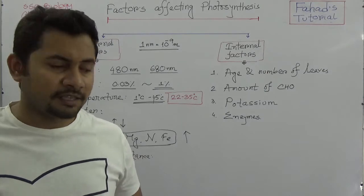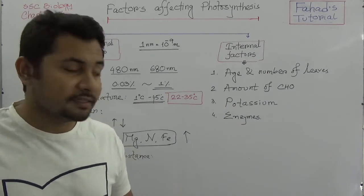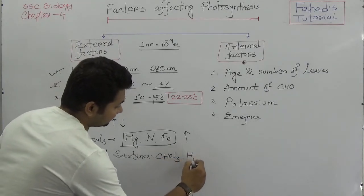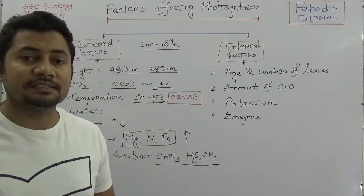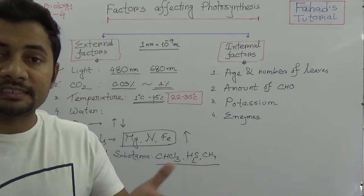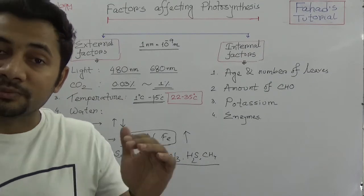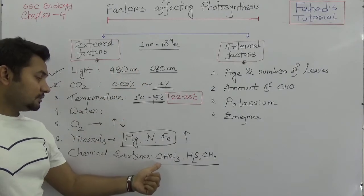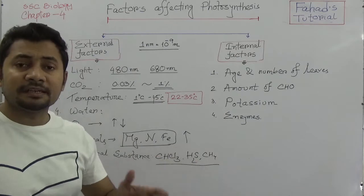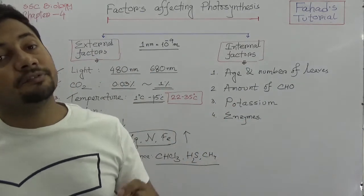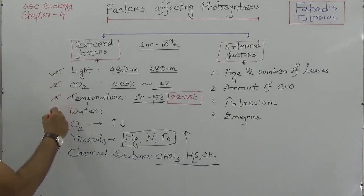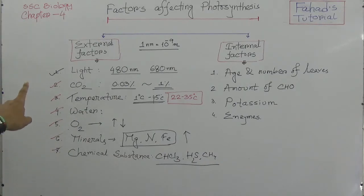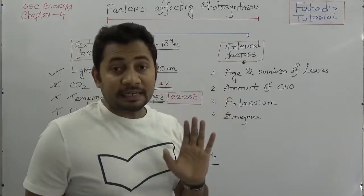Chemical substances are another external factor. If poisonous gases such as chloroform (CHCl₃), hydrogen sulfide, or methane increase in the atmosphere, the rate of photosynthesis will decrease. These chemical substances negatively affect the photosynthesis process. So the external factors affecting photosynthesis are: light, carbon dioxide, temperature, water, oxygen, minerals, and chemical substances.